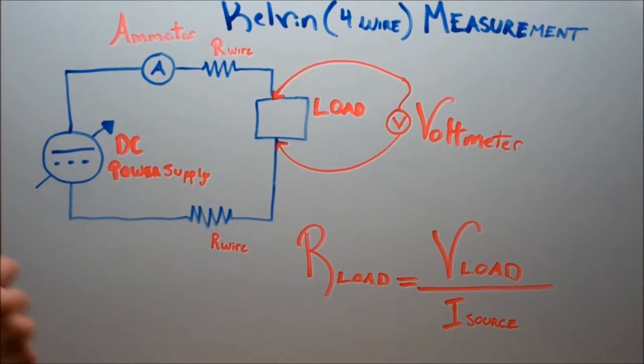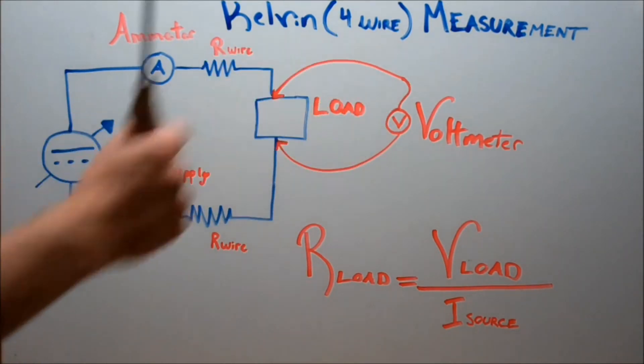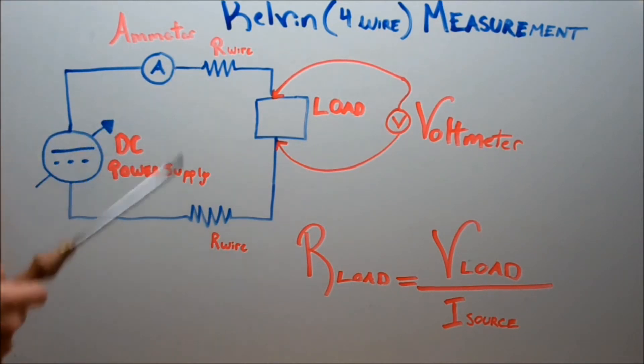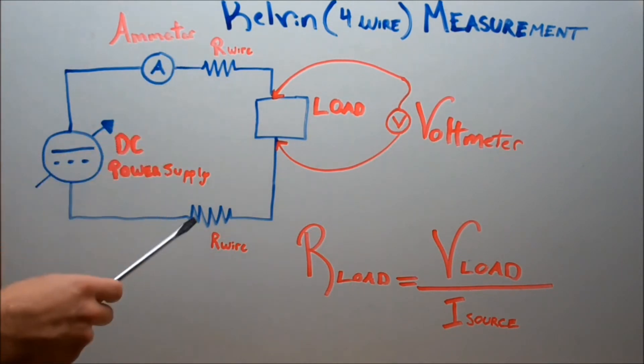Let's just get right into the circuit. The Kelvin measurement is done really simply - all we do is take a DC power supply, run it into an ammeter, and then from that we run it to the load. Now as you can see, there's two resistors here, and what they are are the wires. Usually wires we assume have no resistance for electronics, but they actually do, so that's why they're actually shown here.